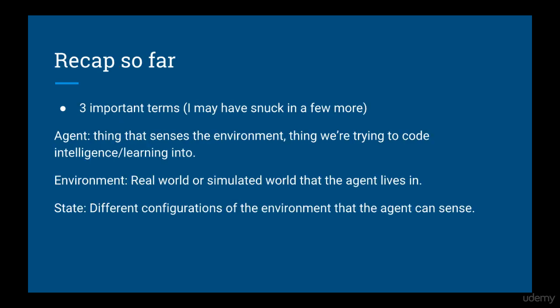Let's recap the terms we've talked about so far. The three important ones are: agent, which is the thing that senses the environment and the thing we're trying to code intelligence and learning into; environment, which is the real or simulated world that your agent lives in; and state, which refers to the different configurations of the environment that the agent can sense.